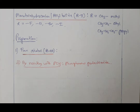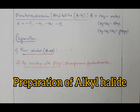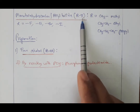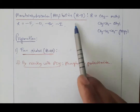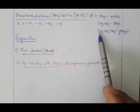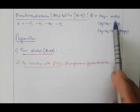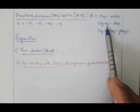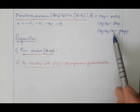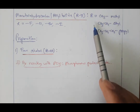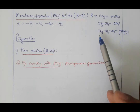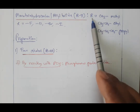In this video we are going to learn about the preparation of monohalohydrocarbon, also known as alkyl halide, represented by the symbol RX. Here X means halogen — it can be fluorine, chlorine, bromine, or iodine — whereas R can be an alkyl group. If you replace R with CH3 it is called methyl. If you add CH2 it becomes ethyl, and again adding CH2 gives propyl. Other examples include isopropyl and t-butyl.